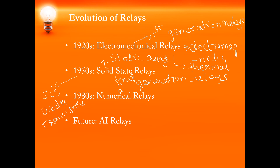Later on in the 1980s, there was an invention of numerical relays. The first numerical relays were microprocessor-based relays. So later on, many types of processors were available, leading to a tremendous revolution in relays. Now, research on AI — artificial intelligence-based relays — has been carried on. This is how relays have evolved over time.